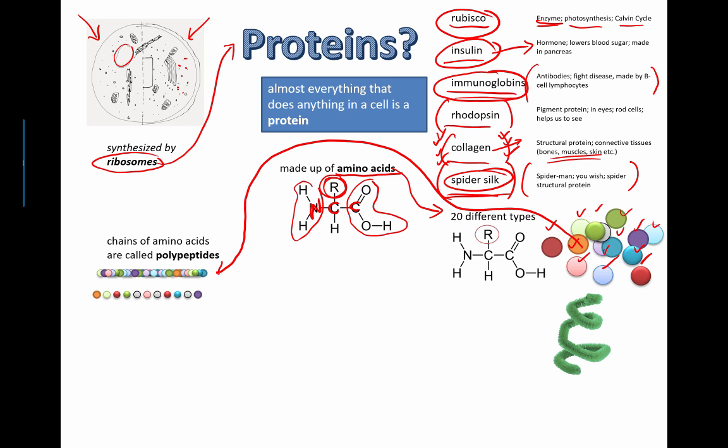...can be rearranged in different ways to form chains of amino acids called polypeptides. So polypeptides, if you connect two amino acids together, the bond in between the two amino acids is called a peptide bond. So polypeptide just means numerous peptide bonds connecting a bunch of amino acids together. Chains of amino acids are called polypeptides.